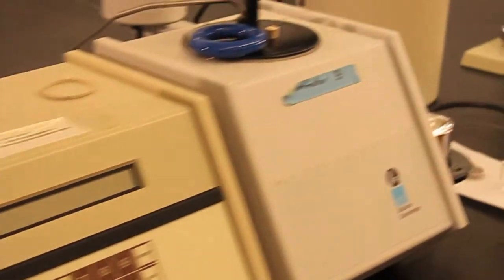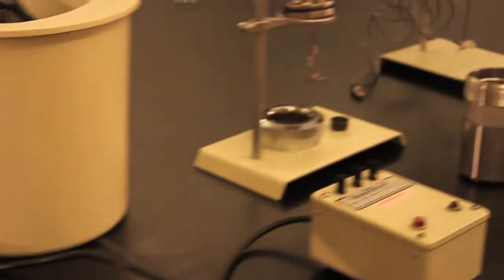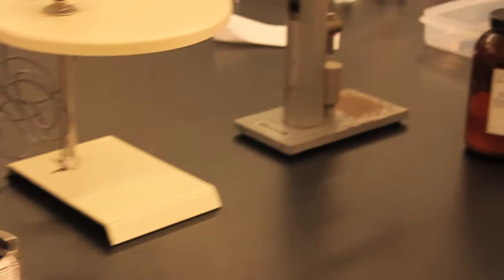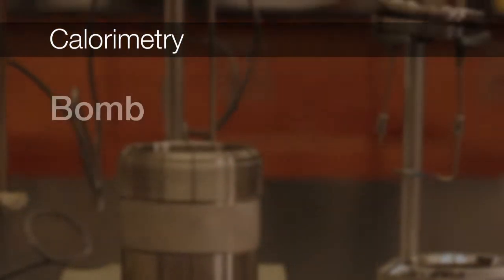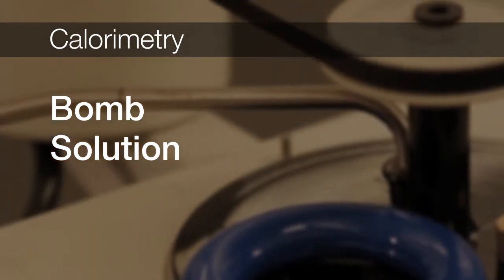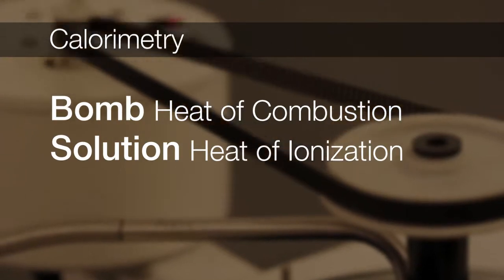There are many different types of calorimetry that can be used to look at a myriad of different processes. In this video, you will take a look at two different types of calorimetry, bomb and solution. These techniques will be used to learn about two different concepts, heat of combustion and heat of ionization.